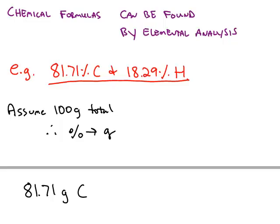One way that chemical formulas can be determined is by carrying out an analysis of the elements. So for example, let's say that we analyze a compound, and it turns out to be 81.7% carbon and 18.3% hydrogen. And these are percentages by mass.